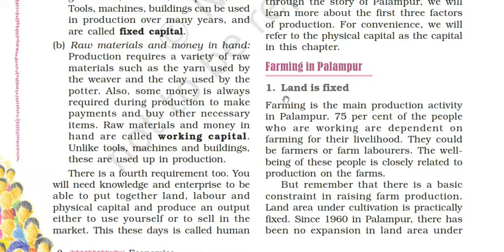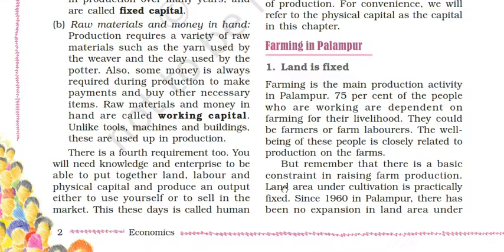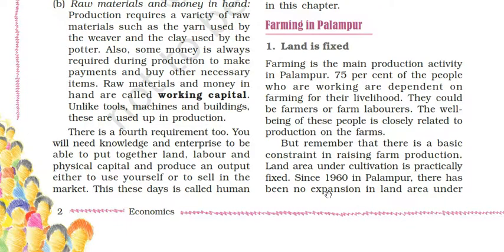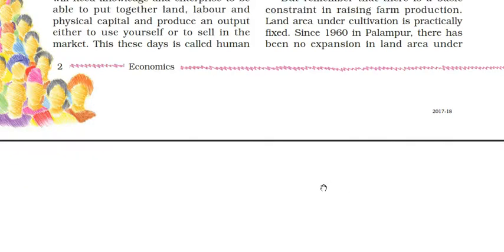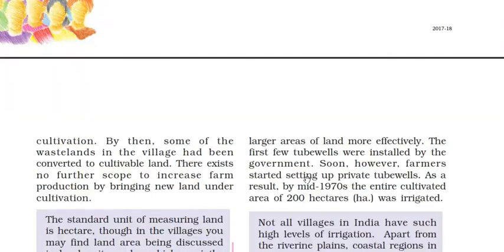Farming in Palampur: Land is fixed. Farming is the main production activity in Palampur. 75% of the working people are dependent on farming for their livelihood - they could be farmers or farm laborers. There is a basic constraint in raising farm production: land area under cultivation is practically fixed. Since 1960 in Palampur, there has been no expansion in land area under cultivation.